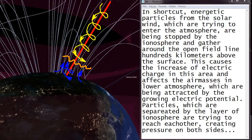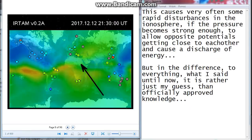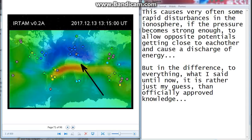In short cut, energetic particles from the solar wind, which are trying to enter the atmosphere, are being stopped by the ionosphere and gather around the open magnetospheric field line hundreds of kilometers above the surface. This causes the increase of electric charge in this area and affects the air masses in lower atmosphere, which are being attracted by the growing electric potential. Particles, which are separated by the layer of ionosphere, are trying to reach each other, creating pressure on both sides. This causes very often some rapid disturbances in the ionosphere, if the pressure becomes strong enough to allow opposite potentials getting close to each other and cause a discharge of energy. But in the difference to everything what I said until now, it is rather just my guess than officially approved knowledge.